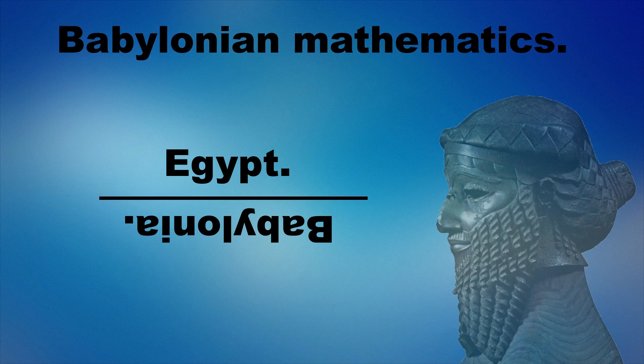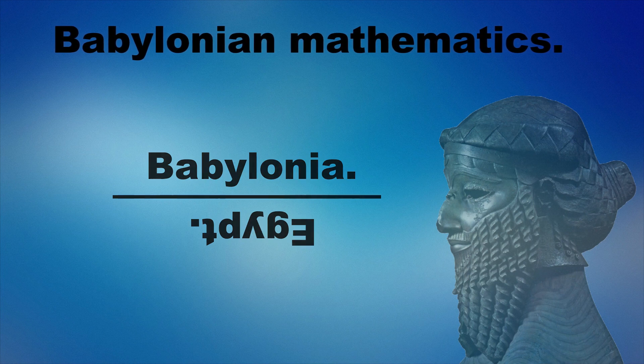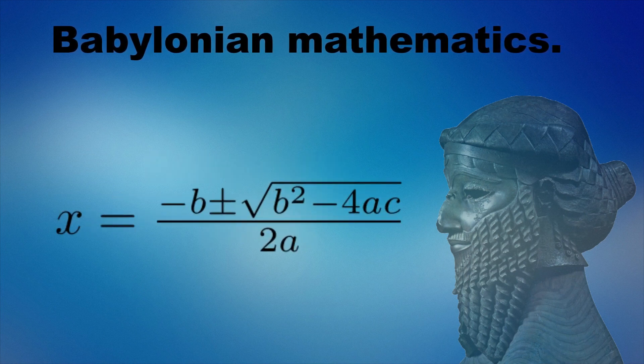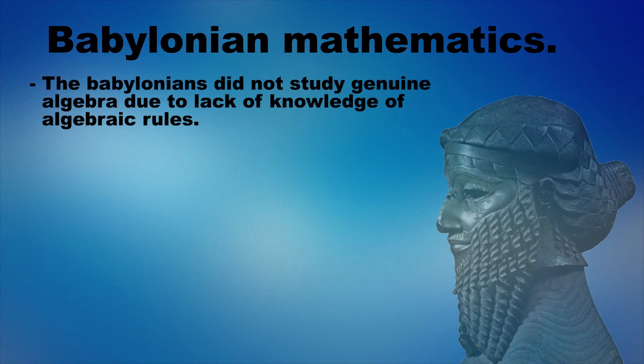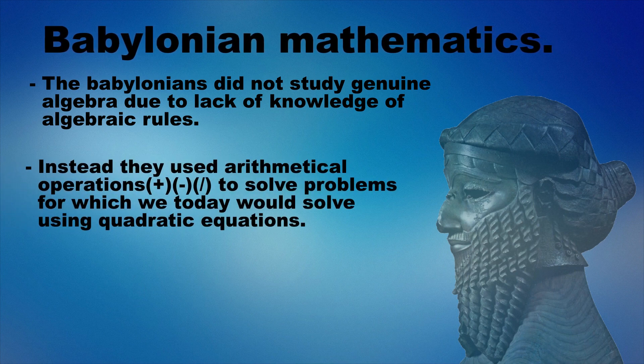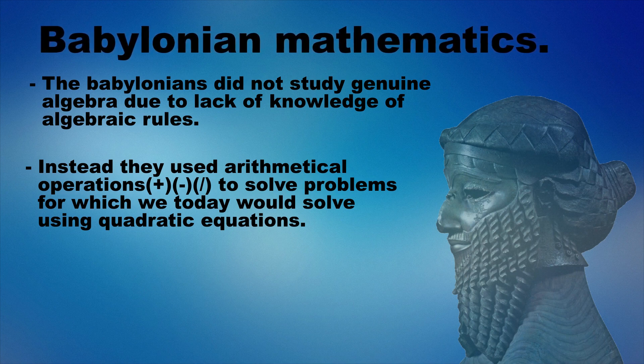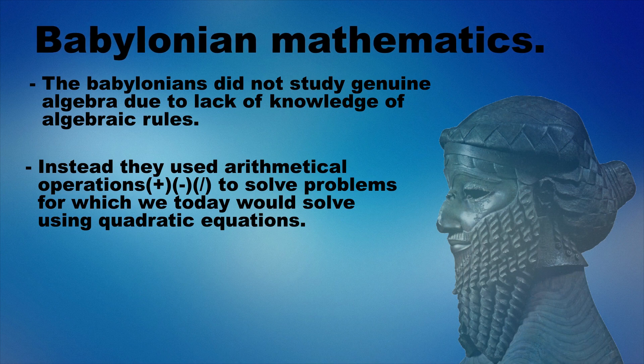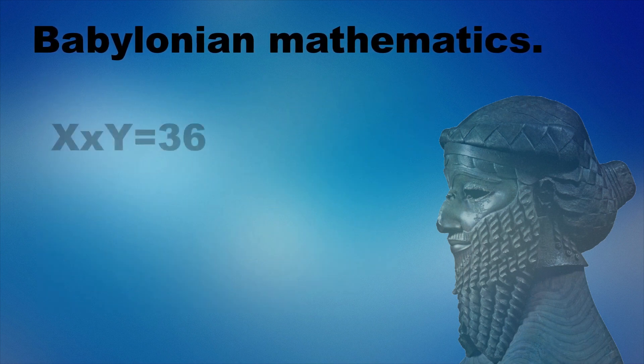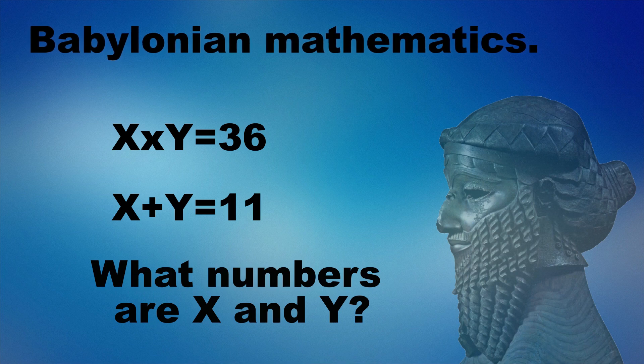Babylonian mathematics was superior to Egyptian mathematics, which becomes evident when we turn to problems that we would today solve with algebra. Algebra is a part of mathematics in which letters and other general symbols are used to represent numbers and quantities in formulae and equations. Now the Babylonians did not study genuine algebra, since they had no understanding of algebraic rules. But we can safely say that the Babylonians instead use arithmetical operations, such as addition, subtraction and equation, to solve problems for which we today would solve using quadratic equations. For example, we have Babylonian tablets that demonstrate how to solve problems such as the following. Given that the product of the numbers x and y is 36, and the sum of x and y is 11, what numbers are x and y?